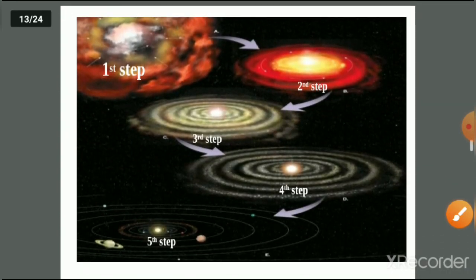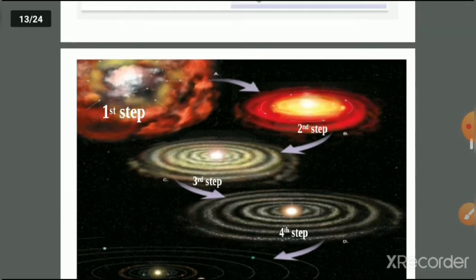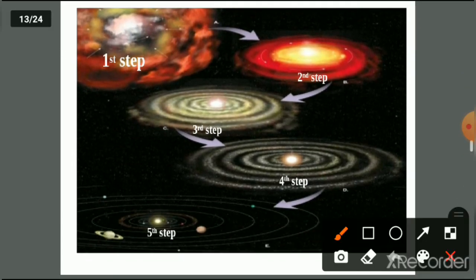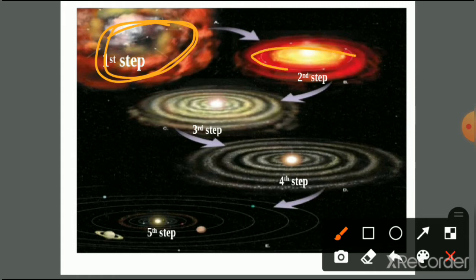To summarize all five steps: in space there existed a hot gaseous spherical nebula, which got flattened into a disk. In Step 3, planetesimals were formed. Then protoplanets formed through accretion, and finally all these accreted to form the planets we have today.